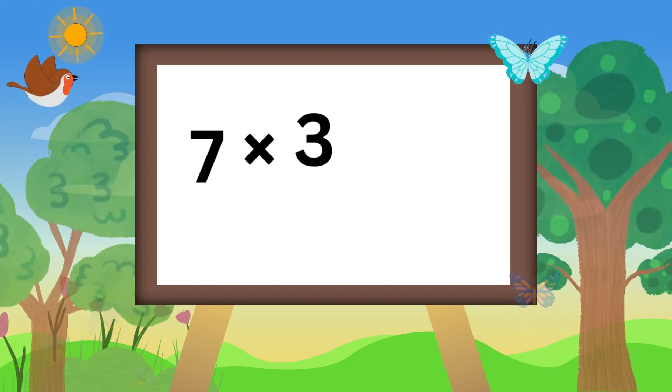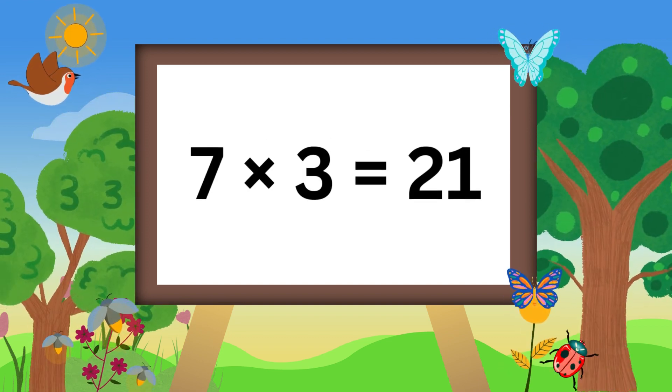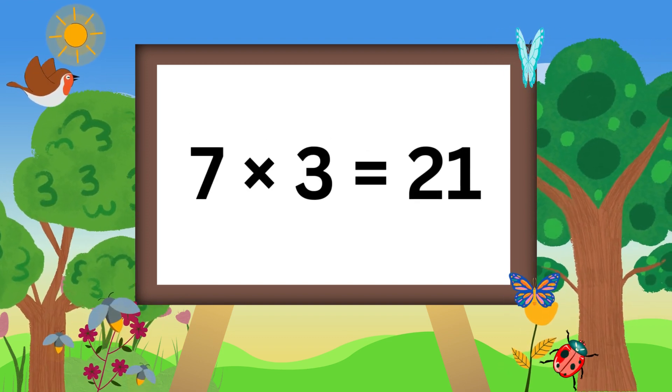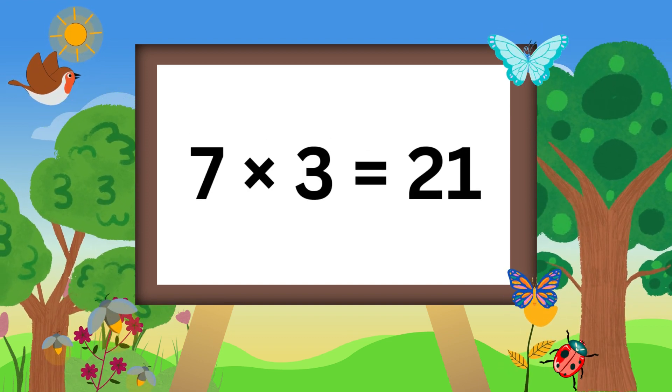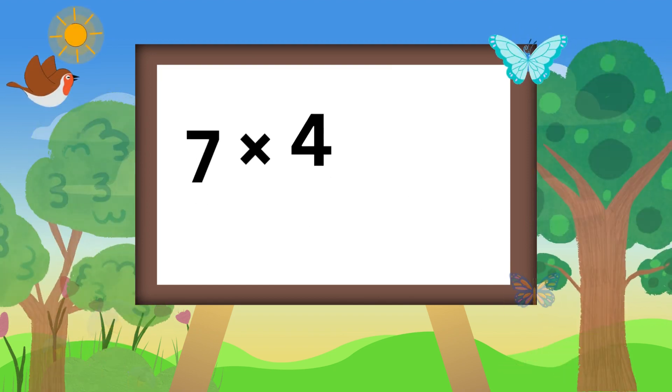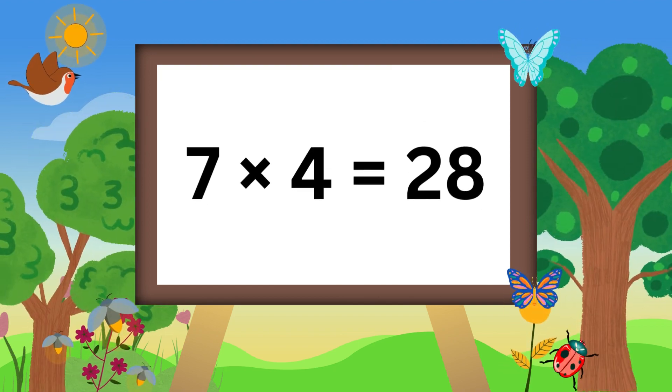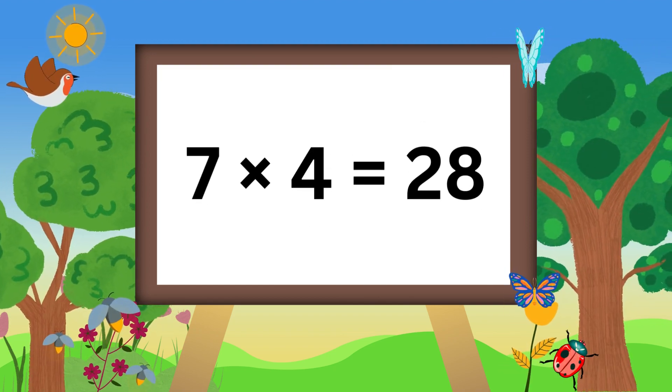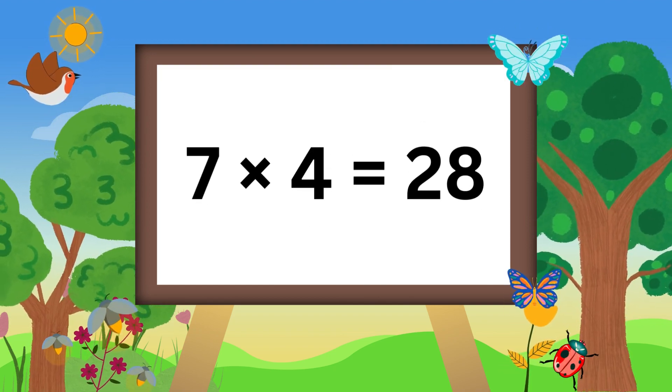Seven threes are twenty-one. Seven fours are twenty-eight.